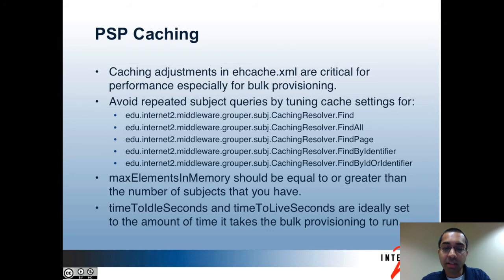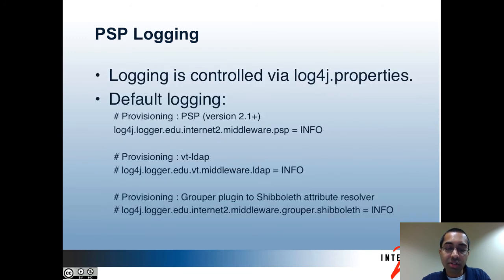You may also want to make adjustments to the time-to-idle seconds for these caches. Ideally, it would be set to an amount greater than the time it takes the bulk provisioning to run. However, there's a trade-off involved because you don't want them to be too high, as that would result in stale data in the cache for a relatively long time — especially if you're using the same ehcache.xml file for the UI and web services as well. Logging in the PSP is controlled by the log4j.properties file just like the rest of Grouper logging. With the default configuration, the PSP package has logging set at the info level.